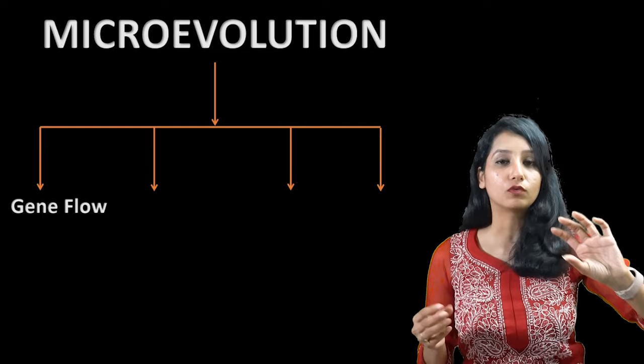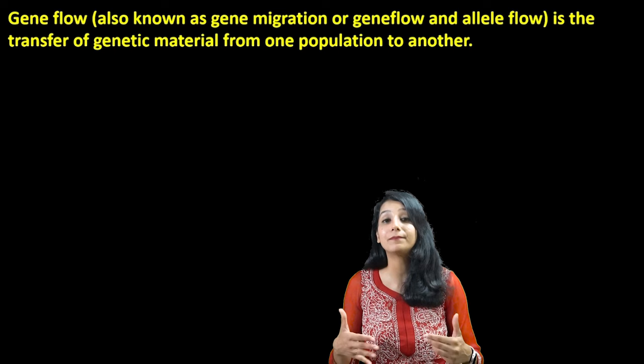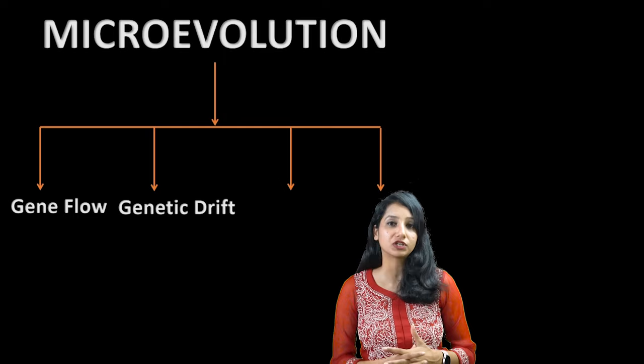Micro evolution can occur by 4 mechanisms. The first is gene flow. The gene flow — genes from another population flow in, and it changes allelic frequency here.